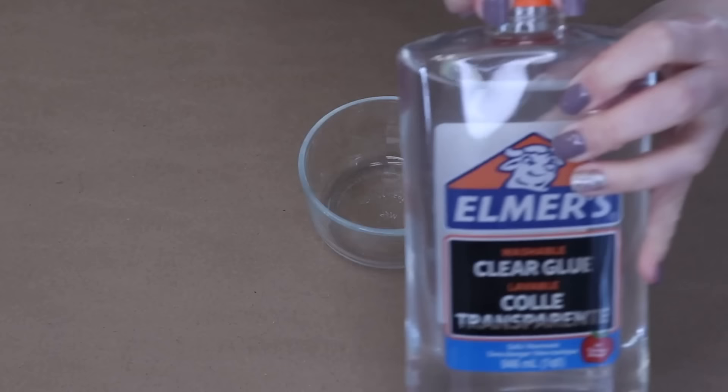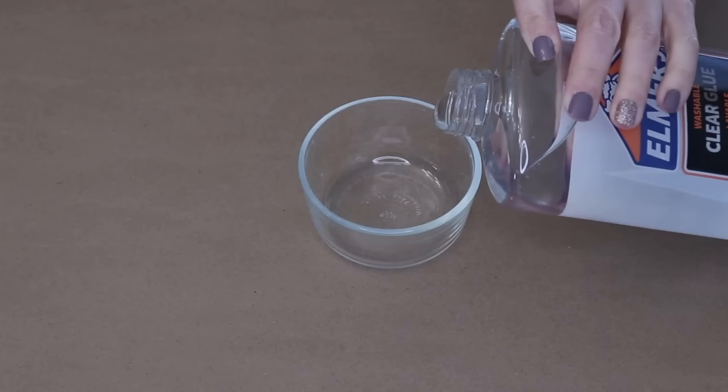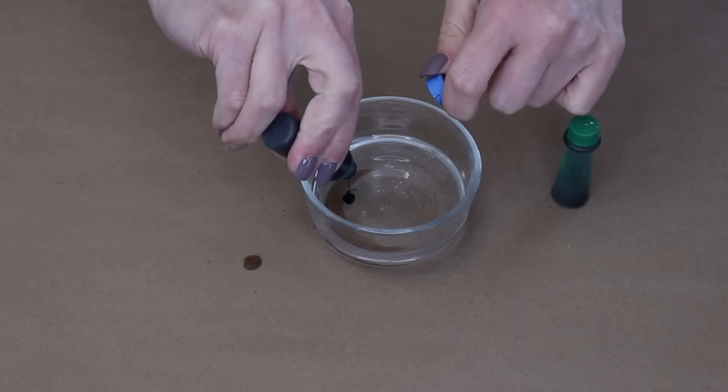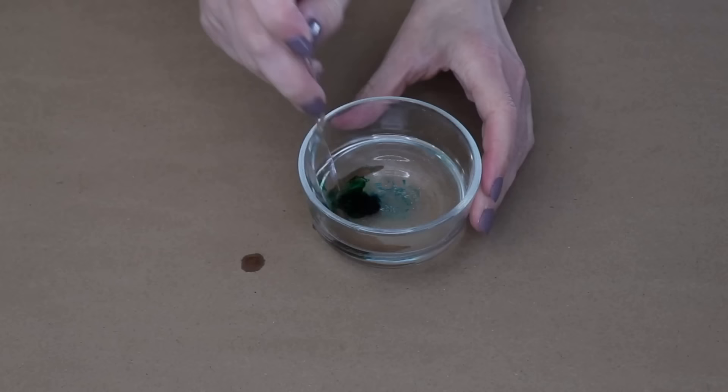You're going to grab a small dish and fill it with clear glue and a little bit of water. I used about two tablespoons of glue and about one tablespoon of water. Then I'm going to drop in a little bit of food coloring, then stir it up until it's mixed really well.